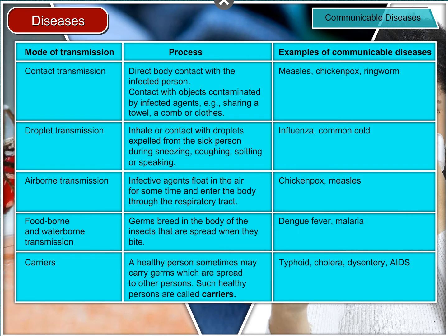Modes of Transmission — Contact Transmission: Direct body contact with the infected person, or contact with objects contaminated by infected agents, for example sharing a towel, a comb, or clothes. Diseases include measles and chickenpox. Droplet Transmission: Inhaling or contact with droplets expelled from the sick person during sneezing, coughing, spitting, or speaking. Diseases include influenza and common cold.